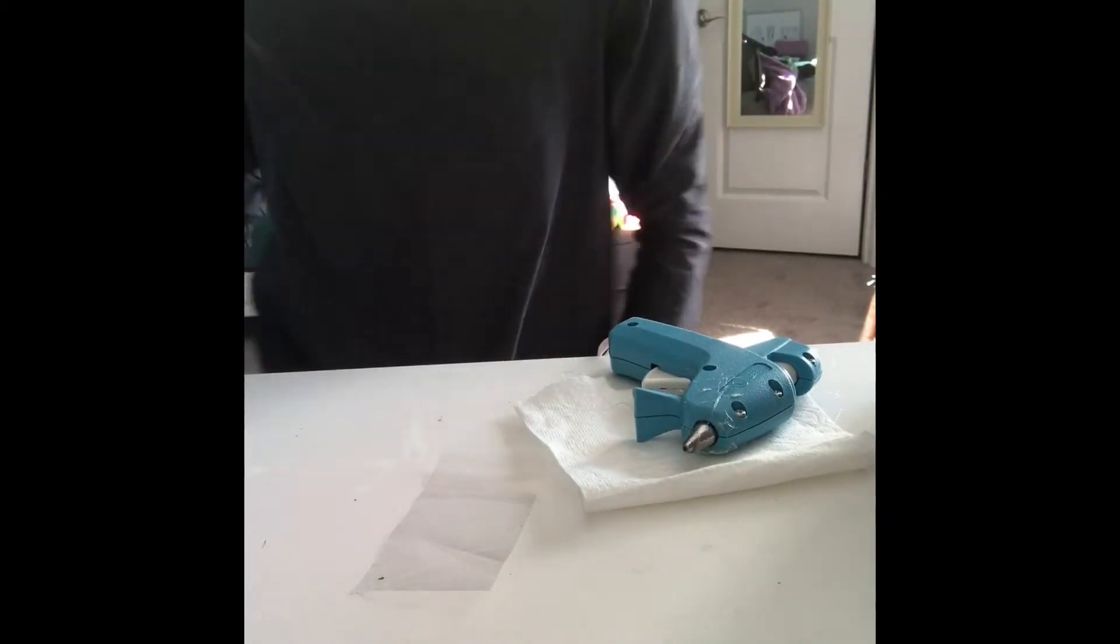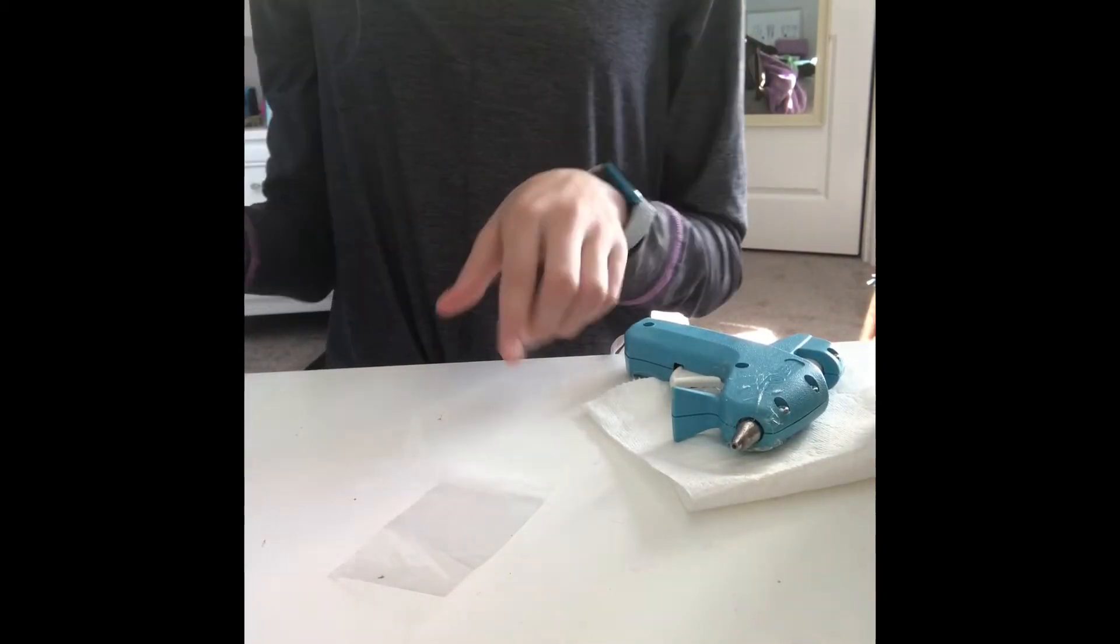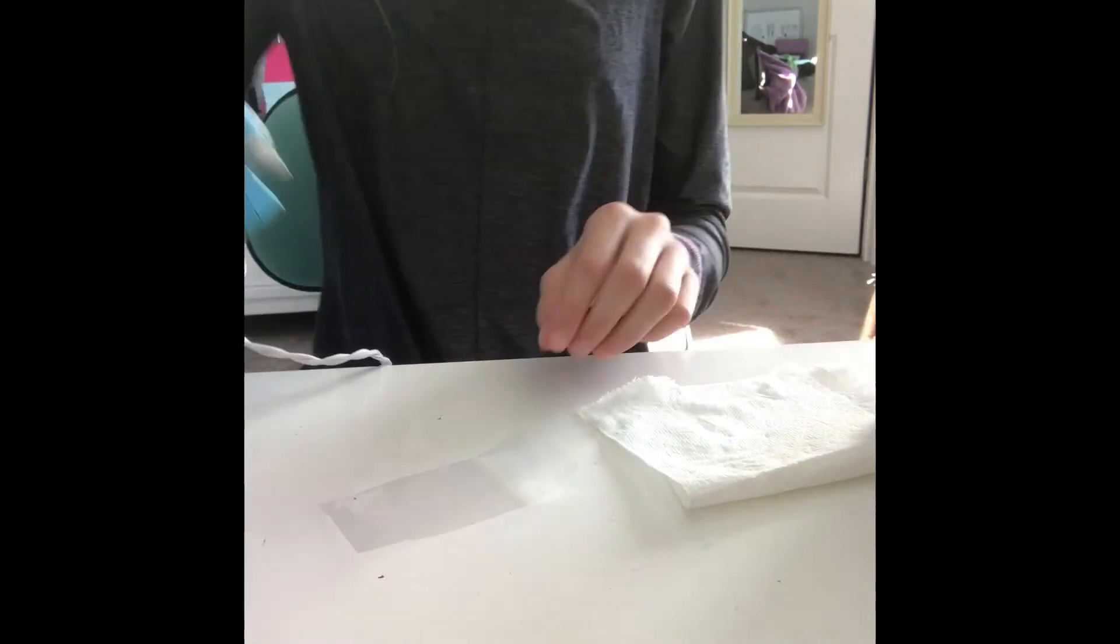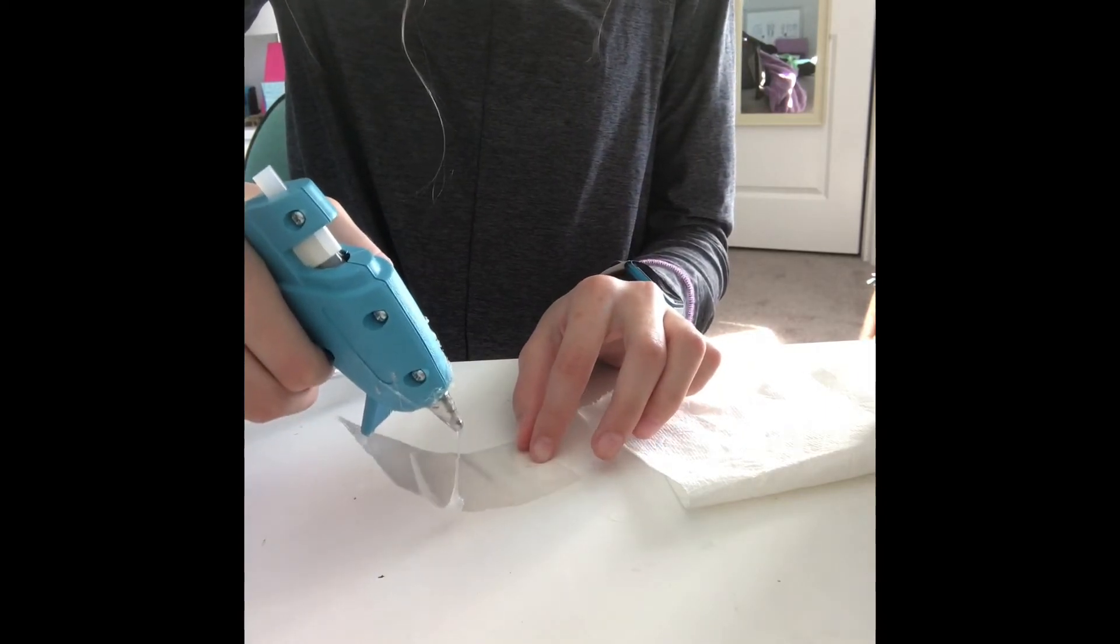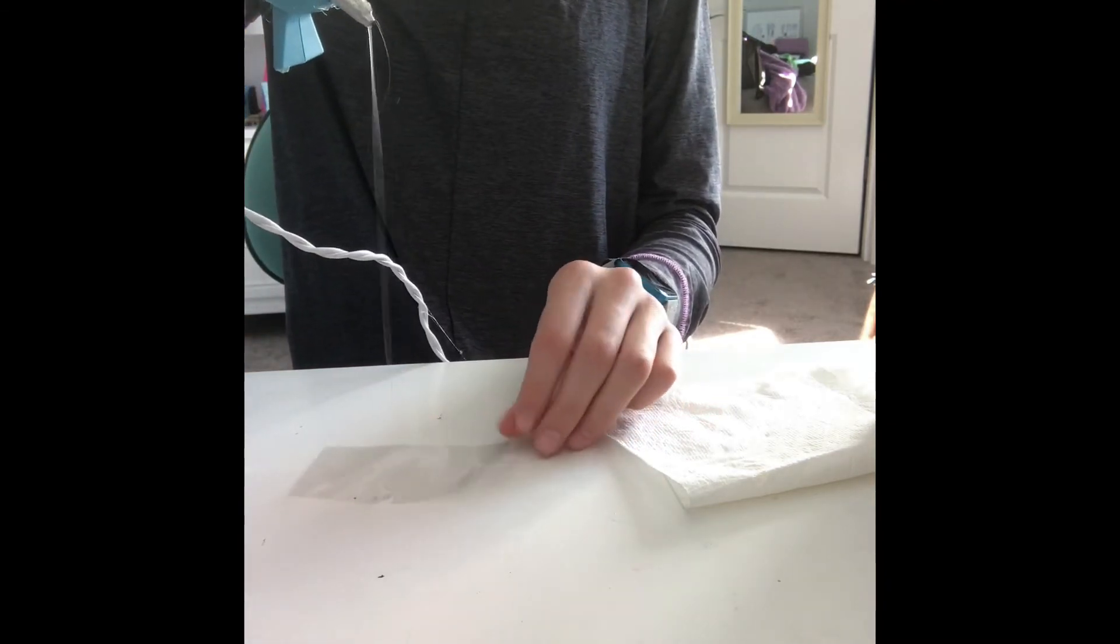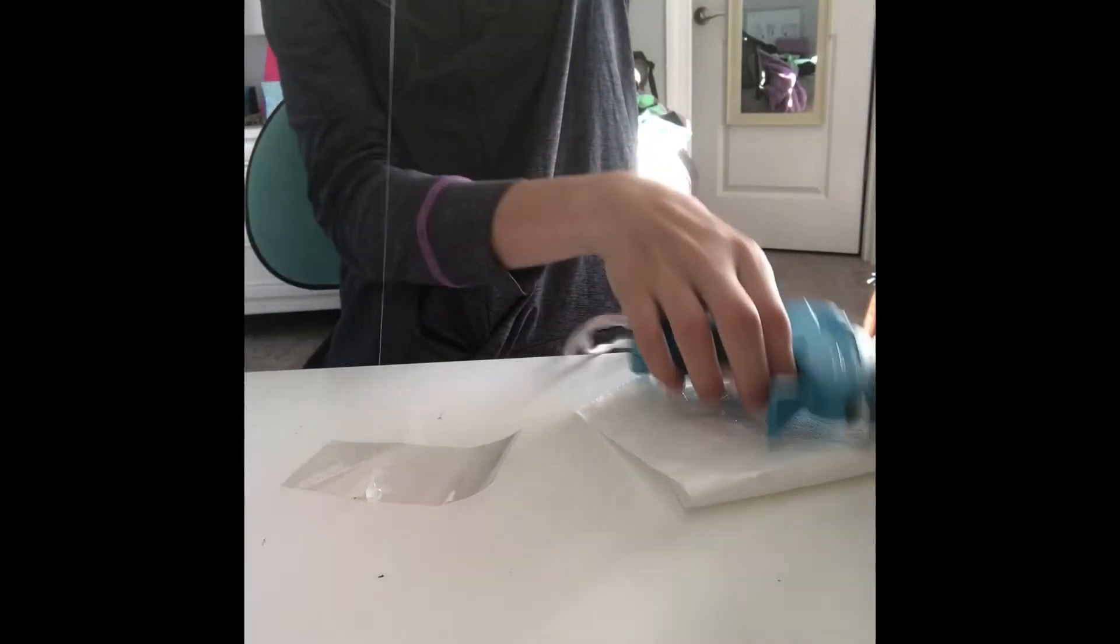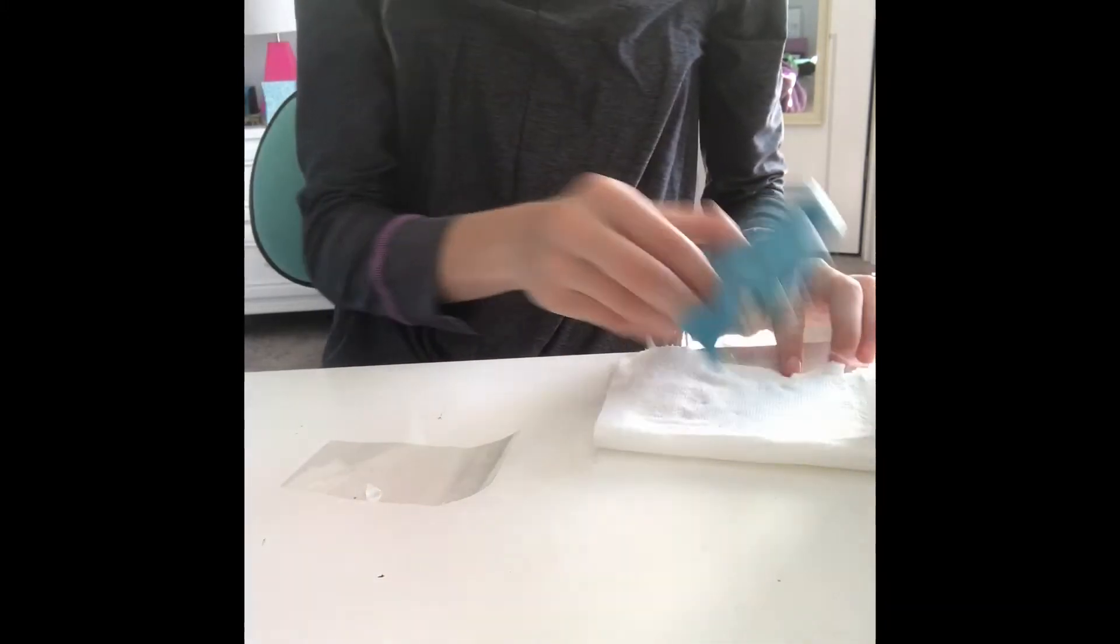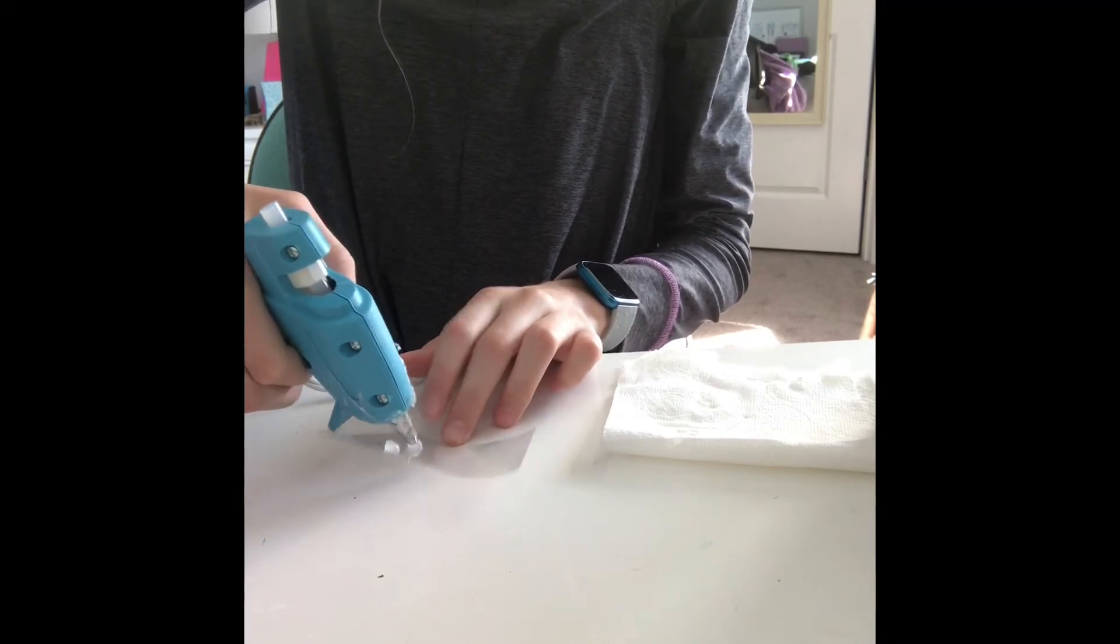The next thing we're going to make is jelly beans and what you're going to need is hot glue, packing tape, and something to color with them later. First you're going to take your packing tape and on the sticky side put little dots of hot glue wherever you want. Make sure to leave enough room in the middle though because we are going to put a logo. I'm making jelly beans but you can make these M&Ms or Skittles, whatever you want.